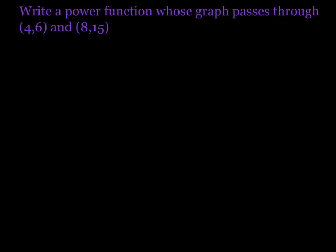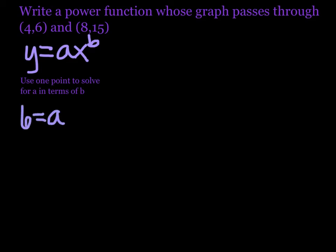All right, next example. Now we're going to write a power function whose graph passes through (4,6) and (8,15). So the first thing you have to remember is the power function is the one where it's y equals ax^b. You have to know the difference between those two. So we are going to use the same steps that we used in the exponential function. We're going to use one point to solve for a in terms of b. So we'll take (4,6). We'll say 6 equals a times 4 to the b.